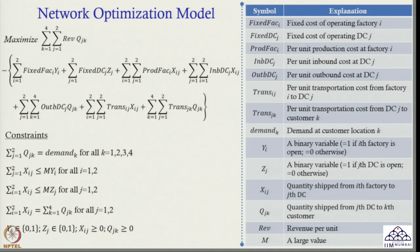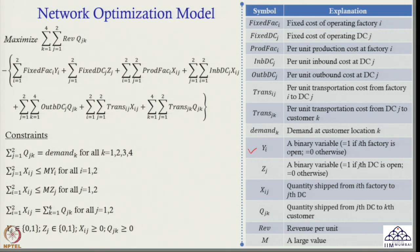The optimization model has various parameters. The first decision variable is yi — yi is a binary variable that will take value 1 if the ith factory is open, 0 otherwise. Then I have another decision variable zj: zj will be 1 if the jth DC is open, 0 otherwise. These two decision variables tell me which factory will open and which DC will open.